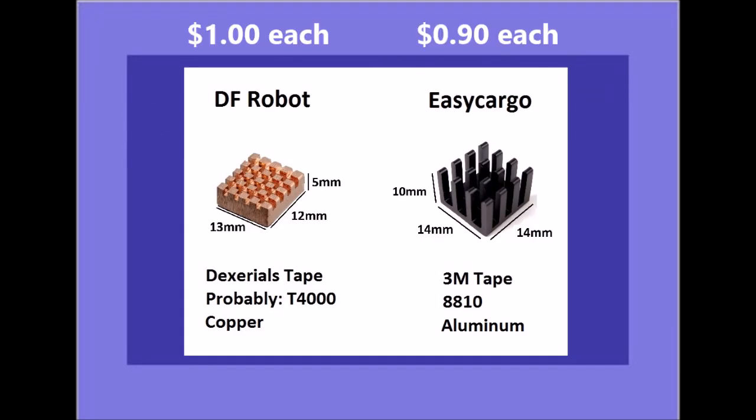One by DFrobot is a copper heatsink and an aluminum heatsink by Easy Cargo. The Easy Cargo heatsinks I bought were 10 millimeters tall, but there's also a 7 millimeter tall version if you have spatial constraints. The tape for the DFrobot heatsinks does not come applied to the heatsink itself. You have to stick it on and then install the heatsink.